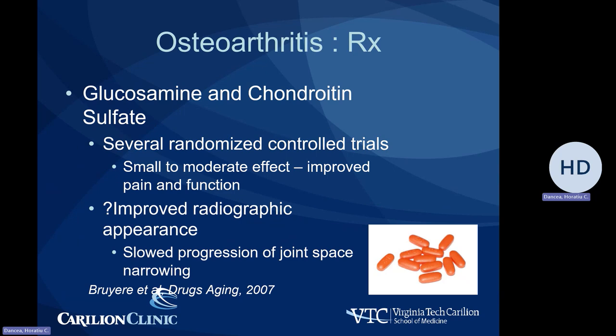Other treatments like glucosamine and chondroitin sulfate have been tried, as those are part of normal cartilage. Several randomized controlled trials have been completed, and these have shown only a small to potentially moderate effect with occasional improvement in pain and function, but no improvement in radiographic findings of the joint. They appear to slow the progression of joint space narrowing according to one study from 2007.